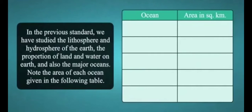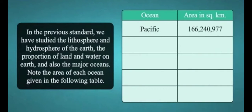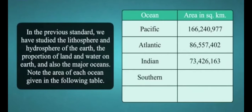Pacific Ocean: 16 Crores 62 Lakhs 40,977 Square Kilometres. Atlantic Ocean: 8 Crores 65 Lakhs 57,402 Square Kilometres. Indian Ocean: 7 Crores 34 Lakhs 26,163 Square Kilometres. Southern Ocean: 2 Crores 3 Lakhs 27,000 Square Kilometres. Arctic Ocean: 1 Crore 32 Lakhs 24,479 Square Kilometres.